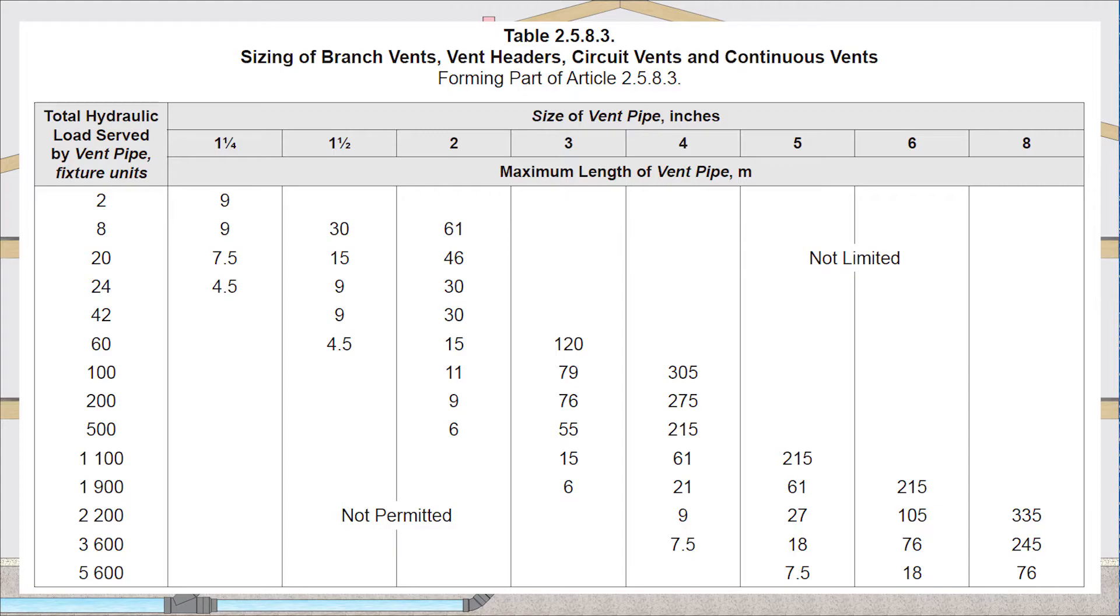All right, now let's reference table 2.5.8.3 and get this sized up. First of all, I have 10 fixture units that I need to serve. If I go down the left hand side, I will see 2 fixture units, 8 fixture units, neither of those is good enough, but I can go to 20 fixture units. Now I move over to the right, and under the one and a quarter inch column, I can see that I can go 7.5 meters of developed length with 20 fixture units. Well, that's not quite good enough. So I move over to the inch and a half column and find out that you can do 15 meters of developed length with 20 fixture units. I think we found our size of our branch vent.